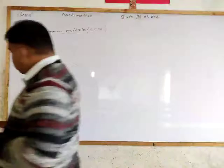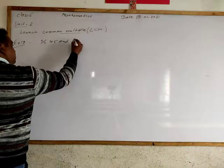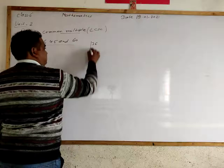Now one example. Example number 19. Find LCM of 36, 45, and 60. First of all, we have to find prime factors of the given numbers.